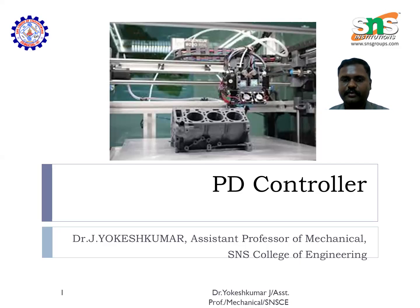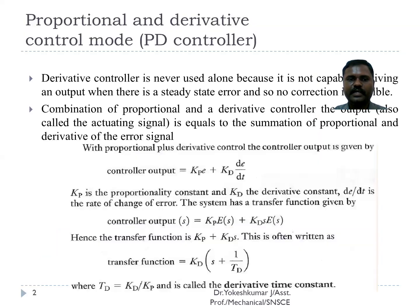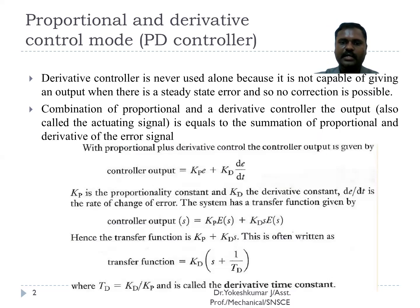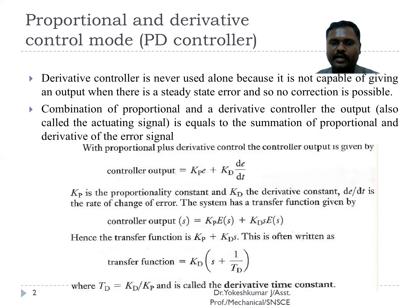Let us have a discussion about the PD controller — how it is functioning and what the response outputs are. As mentioned earlier, PD stands for proportional and derivative. We are combining the proportional and derivative controller so that the output response of the controller is the summation of the output of the proportional controller and derivative controller.